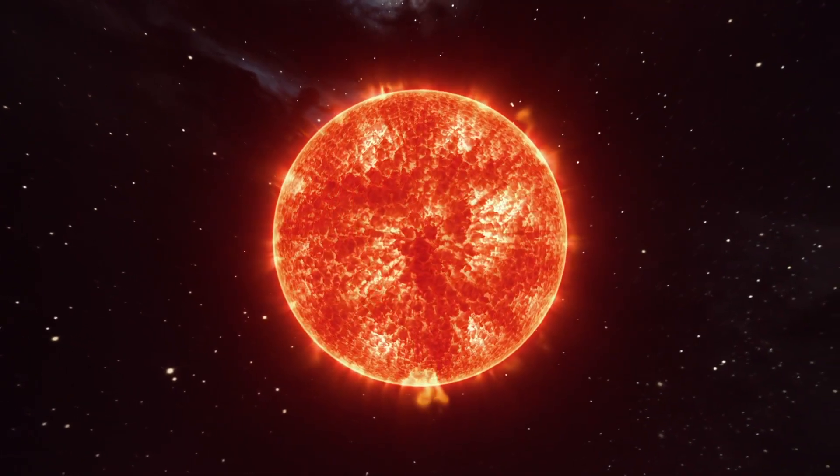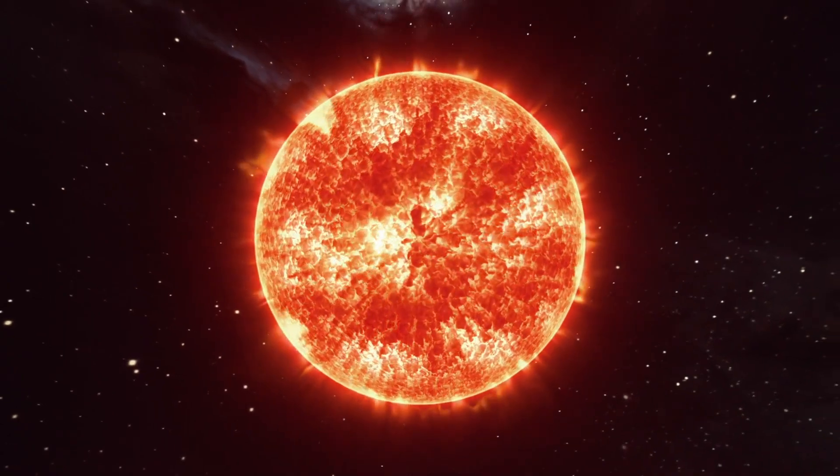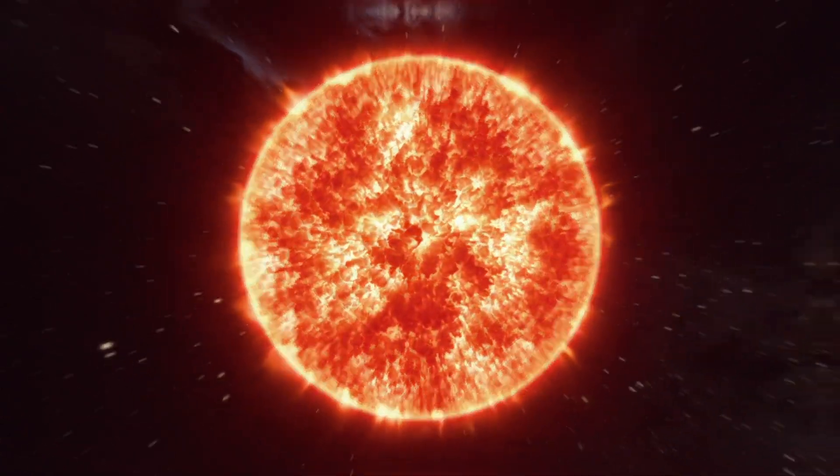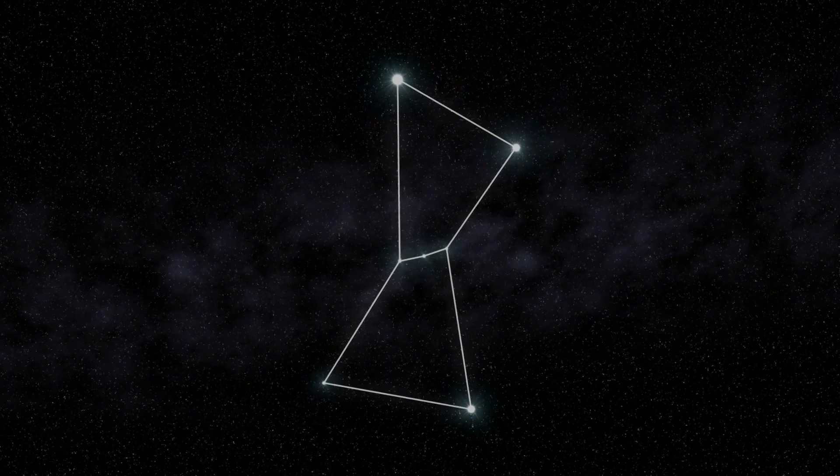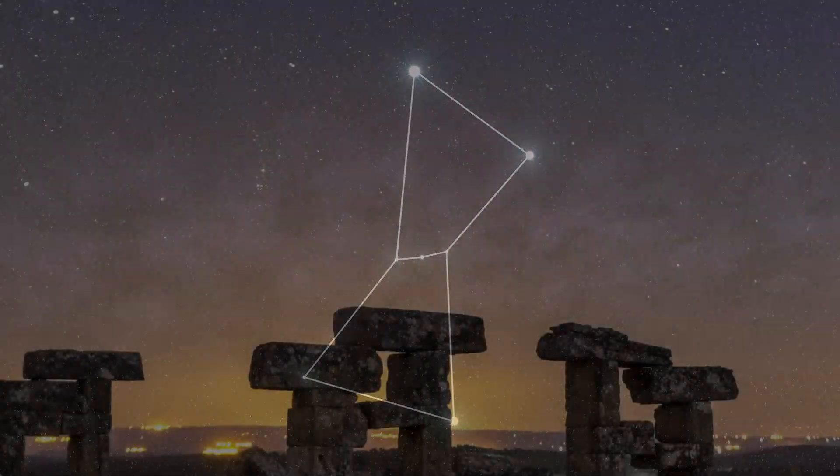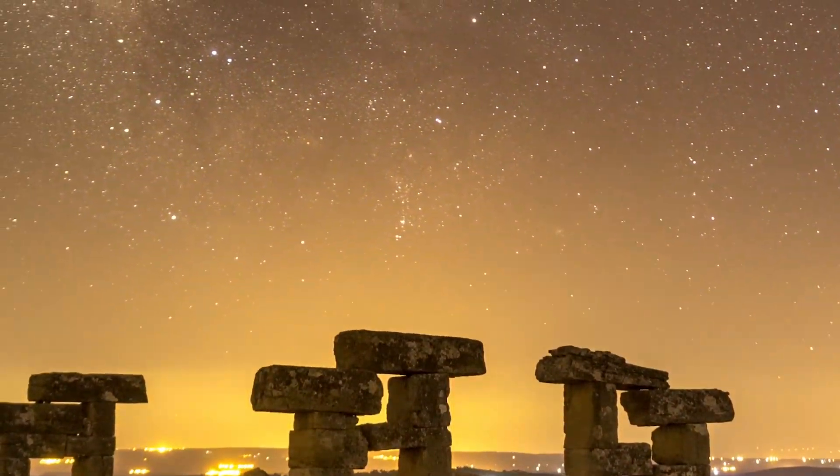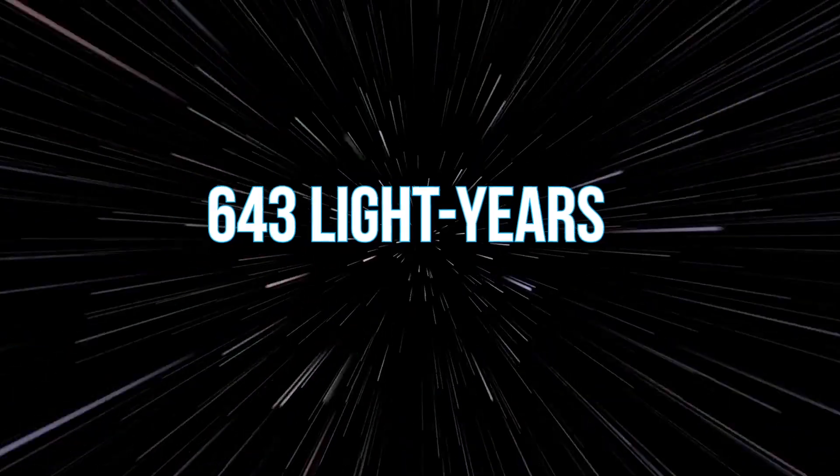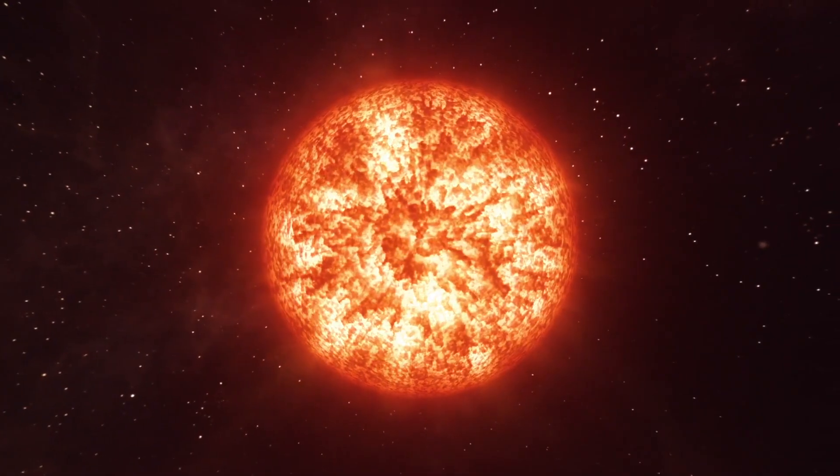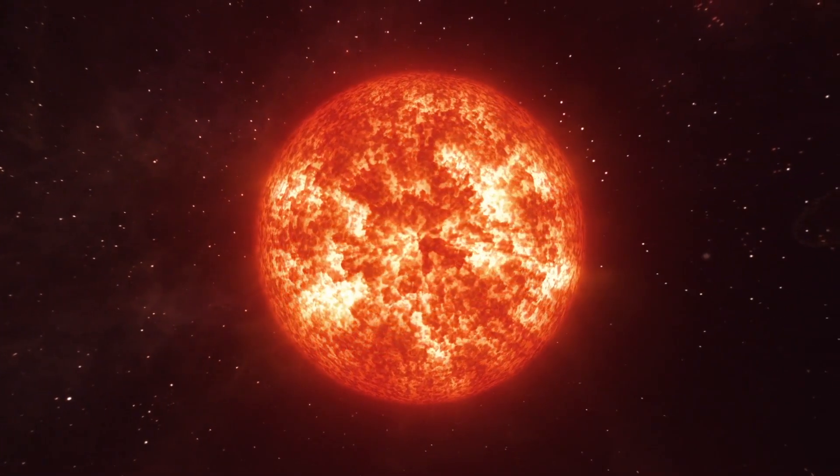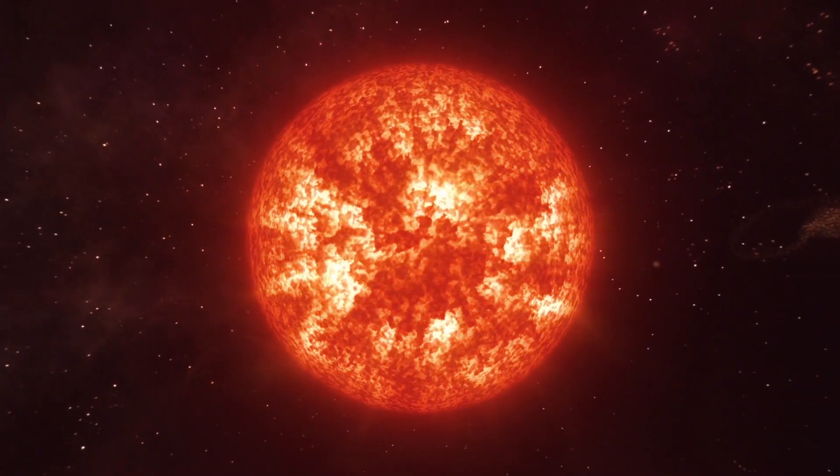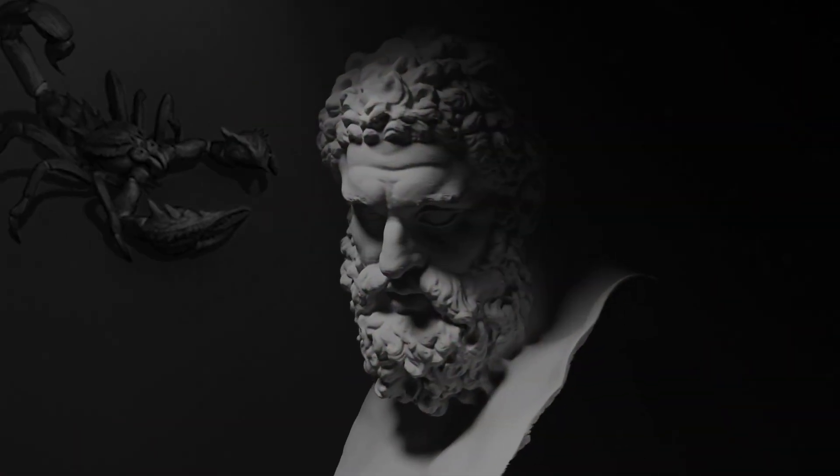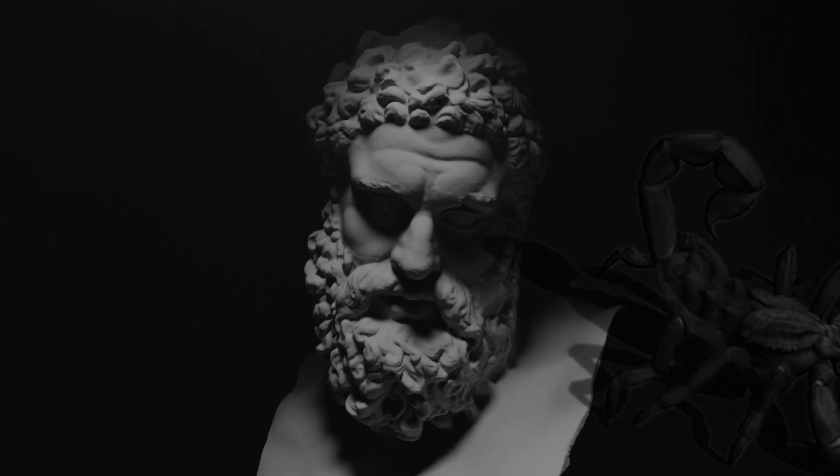Betelgeuse, the famed red supergiant, is a celestial object that has long captivated humanity. Situated in the constellation of Orion, this brilliant star has been a fixture of the night sky for millennia. At a distance of approximately 643 light years away from Earth, Betelgeuse is one of the most luminous stars known to mankind. Its breathtaking size and brilliance have inspired countless myths, legends, and stories throughout human history.